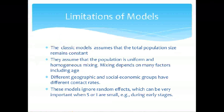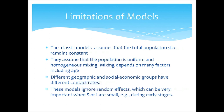Limitations of the model: the classic model assumes that the total population size remains constant. They assume the population is uniform and homogeneous mixing. Mixing depends on many factors, including age. Different geographic and socioeconomic groups have different contact rates. These models ignore random effects, which can be very important when S or I are small in the early stages.